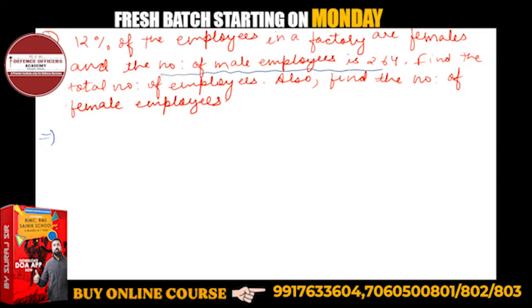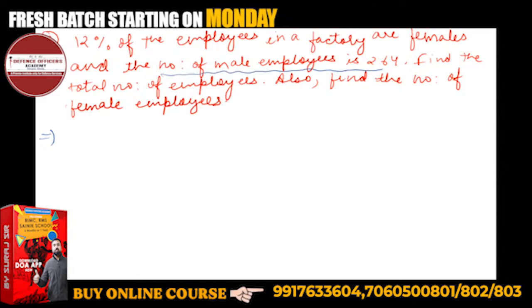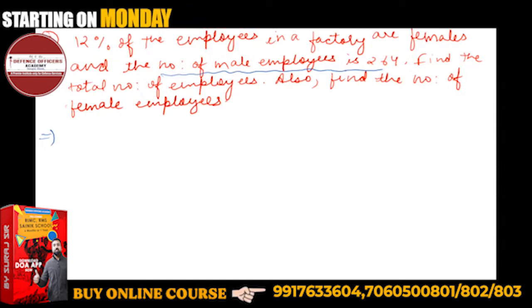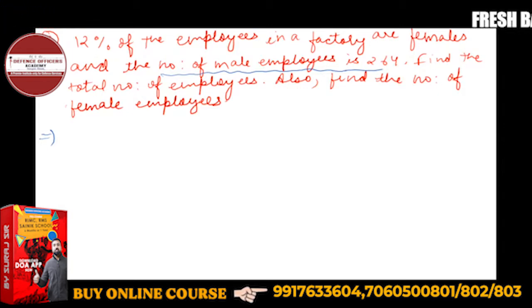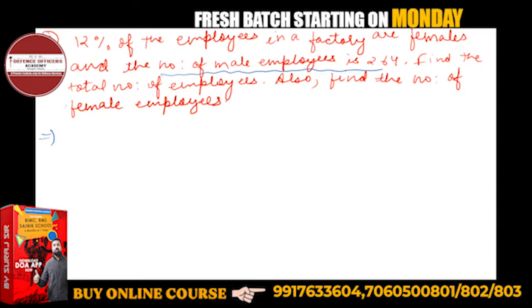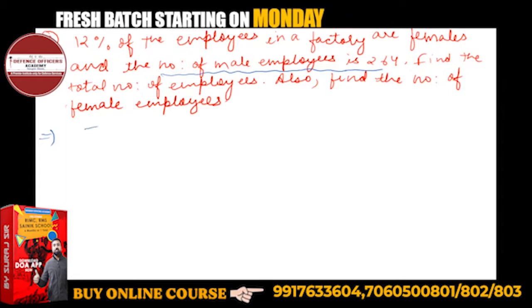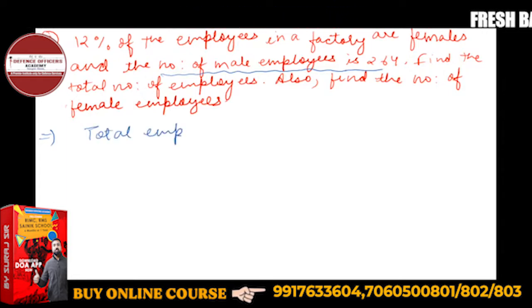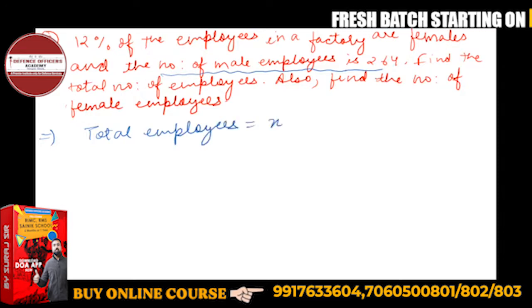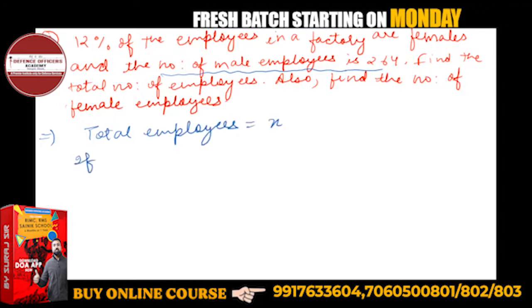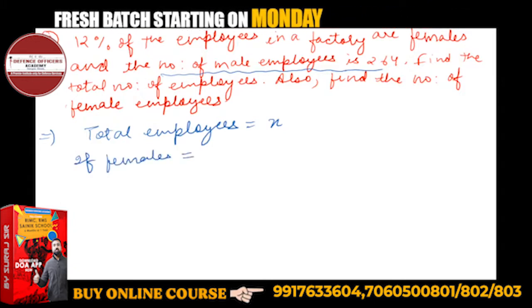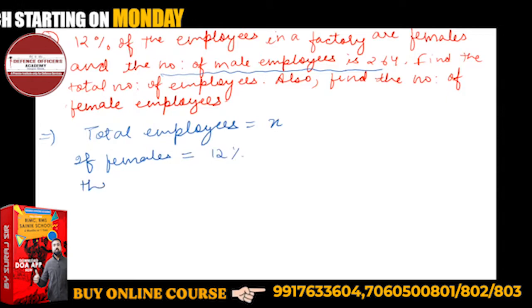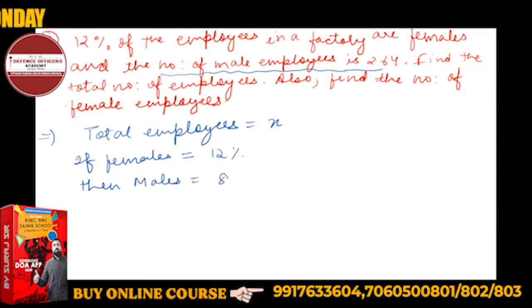The number of male employees is 264. If 12% of the employees are female, the remaining 88% will be male employees. So total employees is 100%, males are 88%, okay?